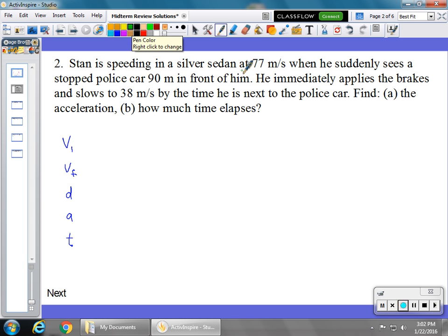In our question, he was traveling 77 meters per second. That's going to be our initial. He slows down to 38 meters per second. But the police car is 90 meters in front of him. That's meters, that's our distance. And after he applies the brakes, it's 38 meters per second, his final velocity.